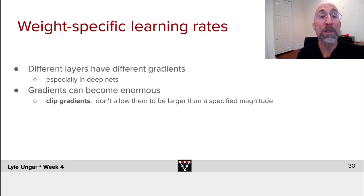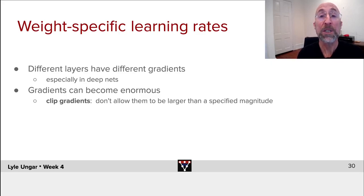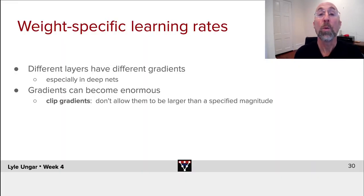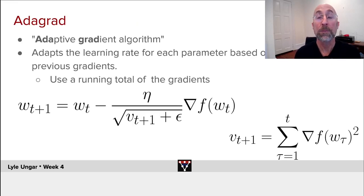But all of the methods that we use for sophisticated learning do weight-specific learning rates. I'm going to show a set of these, starting with the simplest one, Adagrad, and adding in more features. So Adagrad, the adaptive gradient algorithm, adapts the learning rate for each parameter based on how big its previous gradients have been.